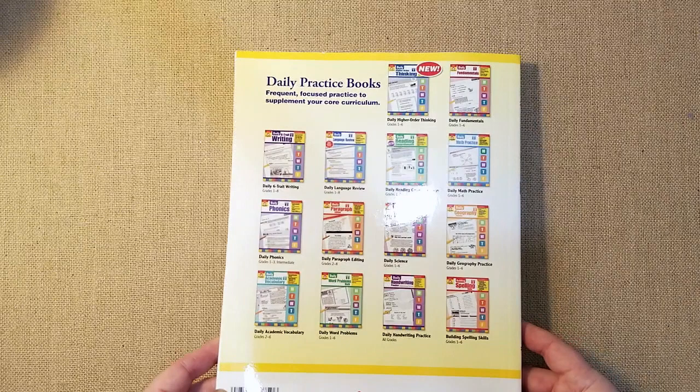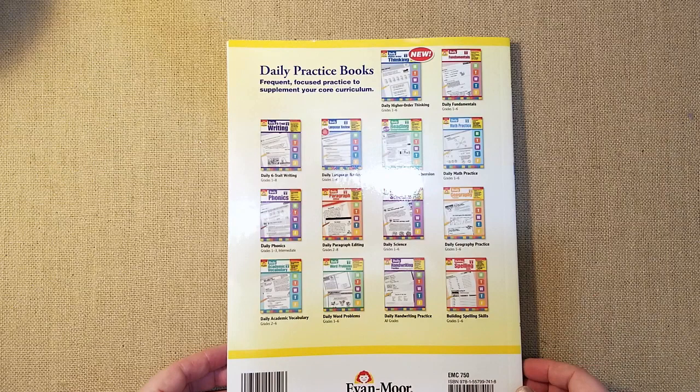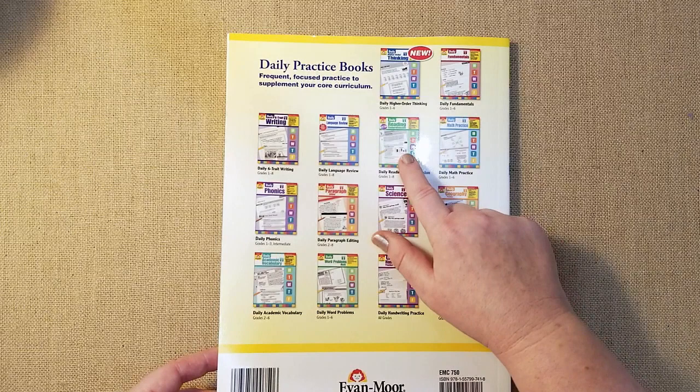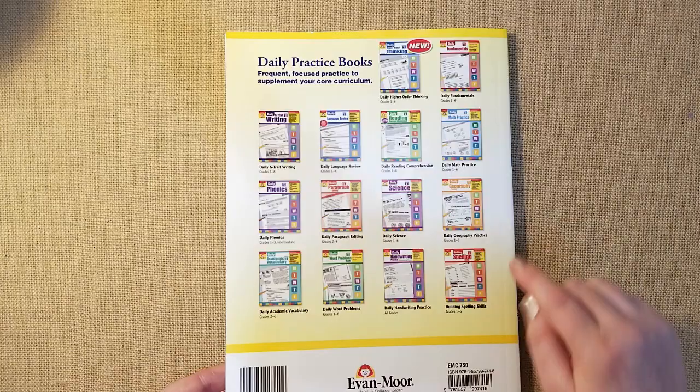And here are all of their daily practice books that they have. They have thinking, which I'm thinking about getting. It's a new one, which is like critical thinking, which I really, really like fundamentals, writing, language review, reading. Reading would be a really good one because it'd be more for reading comprehension. So I might get something like that. That would be good for the summer to have them do. If you're having more of like a relaxed homeschool time, that reading would be really great.